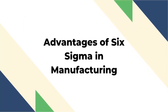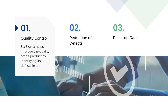First, we shall talk about the advantages. The first advantage is quality control. It is all about quality that matters. In manufacturing, every manufactured product is for delivery in the market. Therefore, any failure or defect in the product is considered a waste, and the product will not go on sale. Six Sigma helps improve the quality of the product by identifying its defects, and once identified, they are removed to improve the quality.